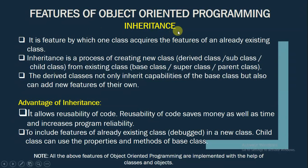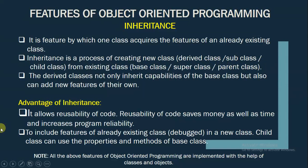Inheritance is a feature by which one class acquires the features of an already existing class. It is the process of creating a new class — which can be called derived class, subclass, or child class — from an already existing class — which can be called base class, superclass, or parent class. The derived classes not only inherit capabilities of the base class but they can also add new features of their own.